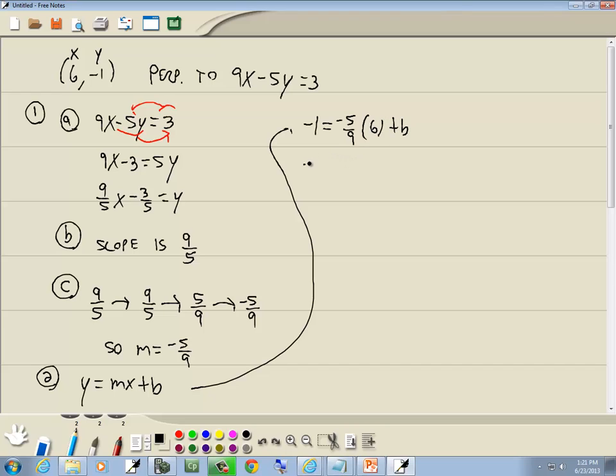And then solve for b. Well, negative 5 times 6 is negative 30 over 9, plus b. And bringing that over to the left side becomes a positive 30 over 9, equals b. Now this is a mixed number. So we'll take the number out in front, the negative 1, multiply it times 9. Negative 1 times 9 is negative 9, plus 30 is 21. And our denominator stays as is. So we've got b is equal to 21/9.